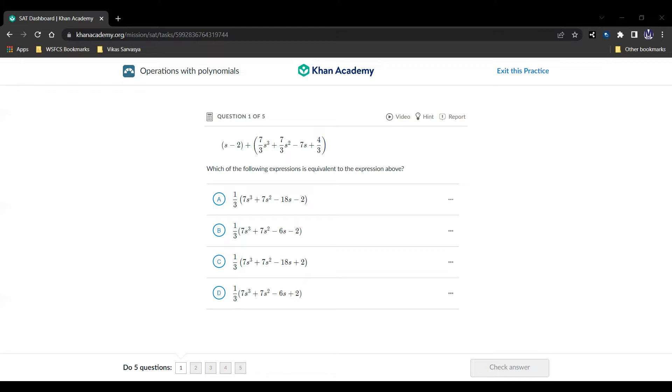Question number one, here it is. We say s minus two plus seven-thirds s cubed plus seven-thirds s squared minus seven s plus four-thirds. And we're asked which of the following expressions is equivalent to the expression above. So let's see what we can do.